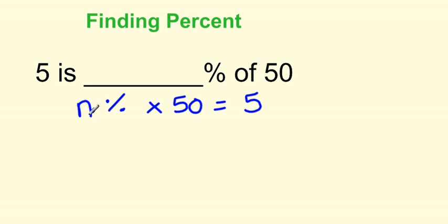So we need to solve for n. Well, n is a percentage, just means n over 100. So percentage means per 100 times 50 equals 5.